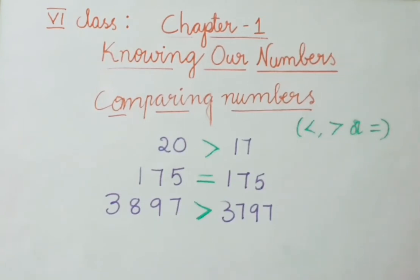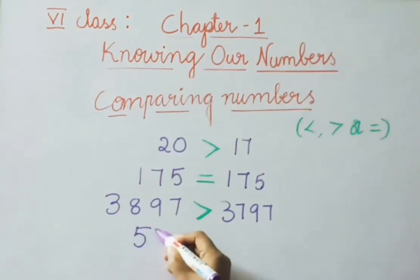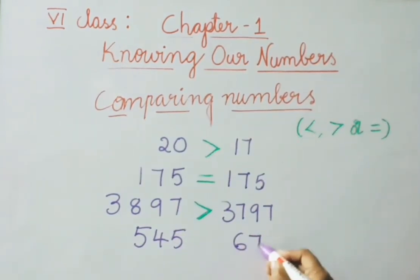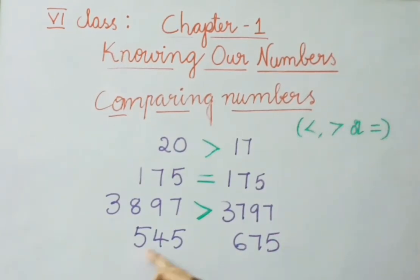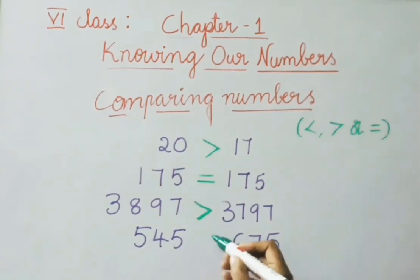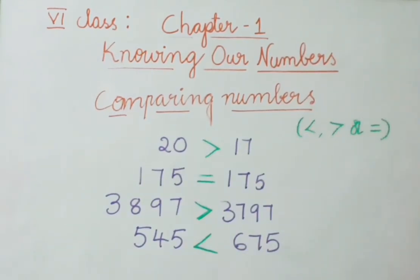Let us see another example: 545 and 675. We must say which one is greater or less. Check the hundreds place: 500 and 600. 600 is greater, so we use the less than symbol — 545 is less than 675.